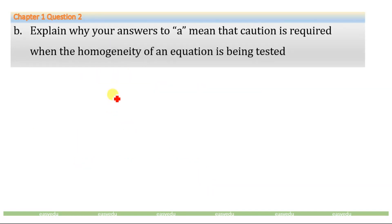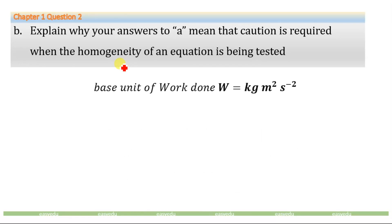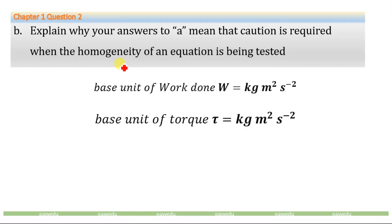For part B, we need to explain why caution is required when the homogeneity of an equation is being tested. Homogeneity of an equation means that both sides of the equation have the same base units, meaning the equation is balanced. We have used two different quantities — work done and torque — and both have the same base units, yet they are completely different physical quantities. Work done, which is energy, is a scalar quantity, but torque is a vector quantity.